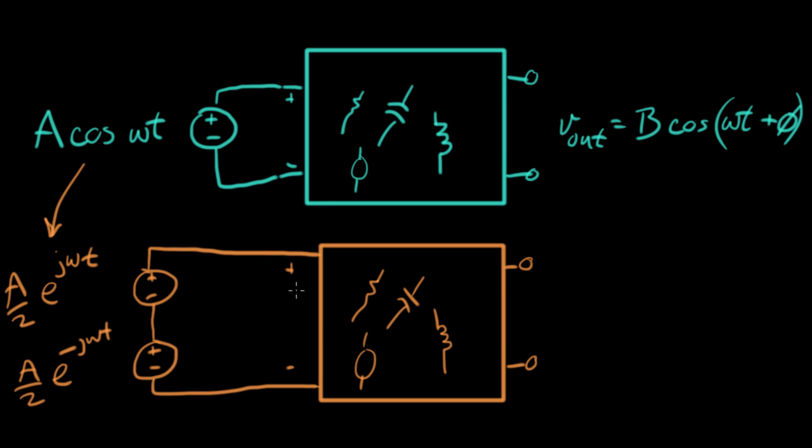Using the idea of superposition, I'm going to apply each of these two inputs one at a time, and then add the results together. Over here I'm going to get two outputs. I'm going to get a V out plus, which is what happens when I put in this plus source and I suppress this one, which means I short it out.